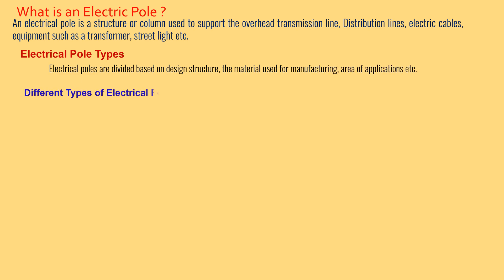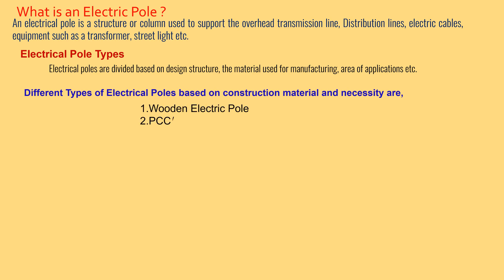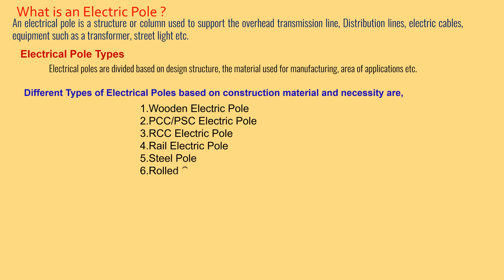Different types of electric poles based on construction material and necessity are: wooden pole, PCC or PSC pole, RCC pole, rail electric pole, steel pole, roll steel joist, H and I beam pole, and lattice steel structure or steel tower.